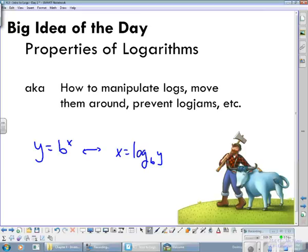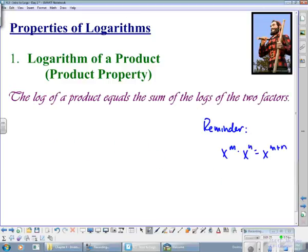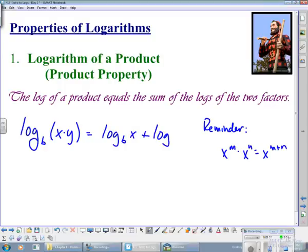And because of that, the properties of logarithms are going to be very similar to the properties of exponents. So what the product property says is that if I have a log base b of x times y, that's the same thing as the log base b of x plus the log base b of y.